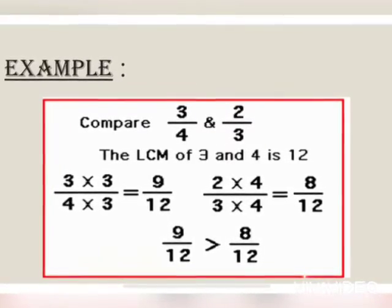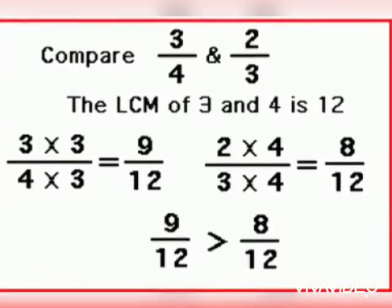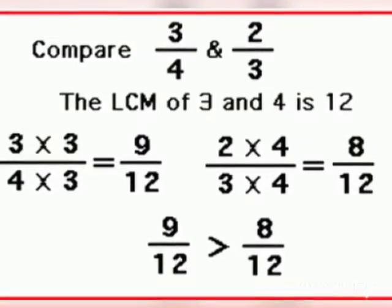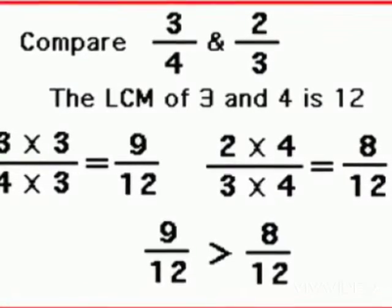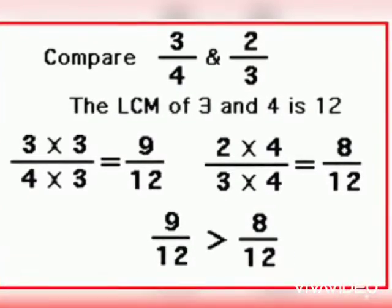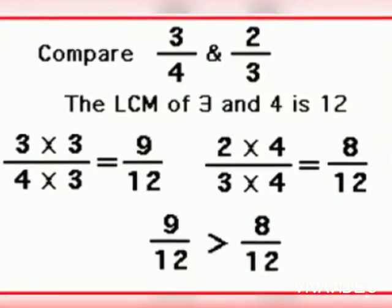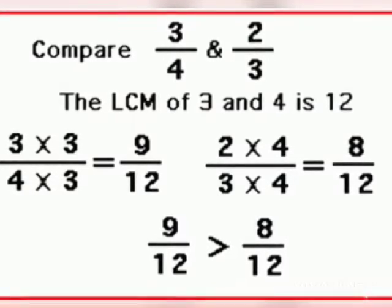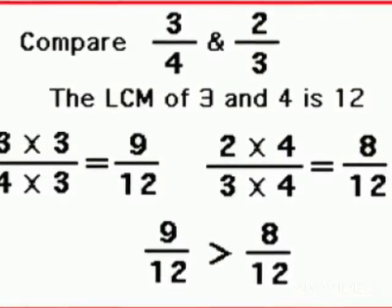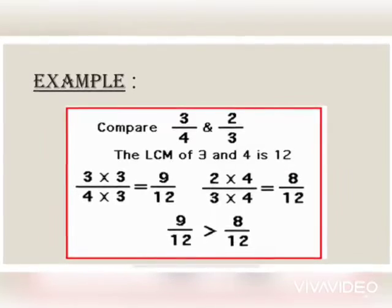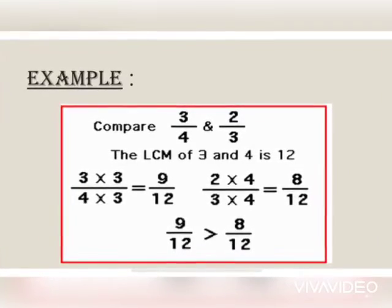And now the next step is to convert the given unlike fractions, that means 3 by 4 and 2 by 3, into the equivalent fractions with LCM 12. And we will get 3 multiply 3 upon 4 multiply 3 is equal to 9 by 12. And 2 multiply 4 upon 3 multiply 4 is equal to 8 by 12.